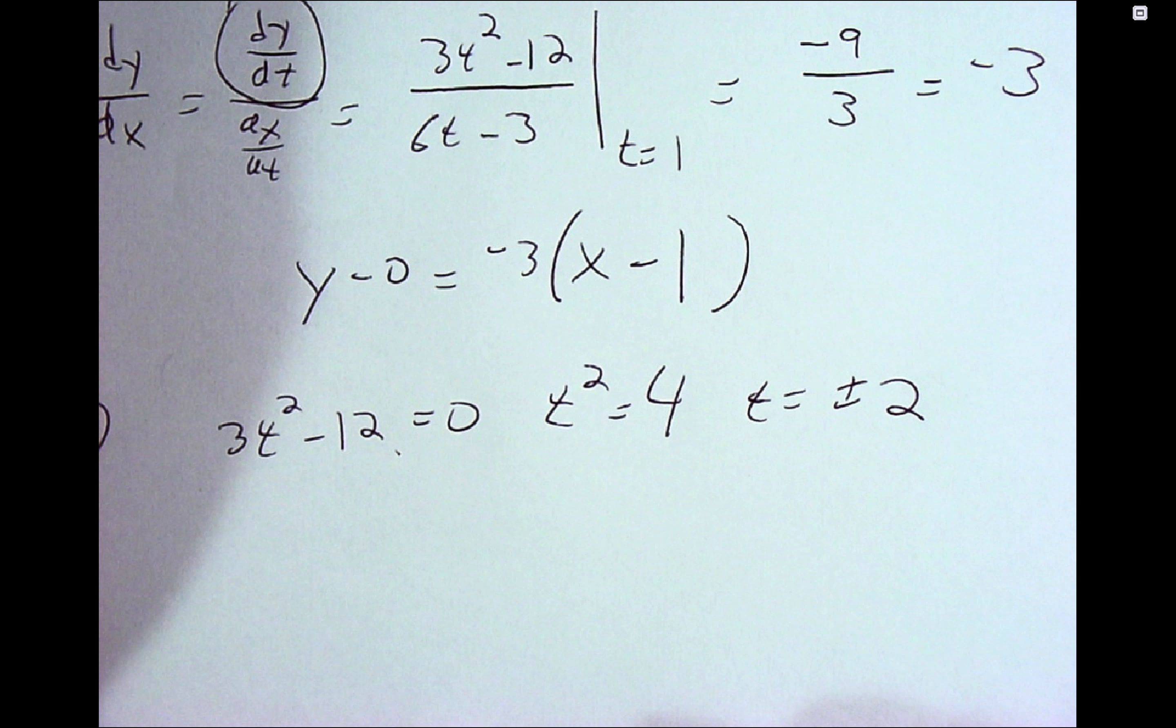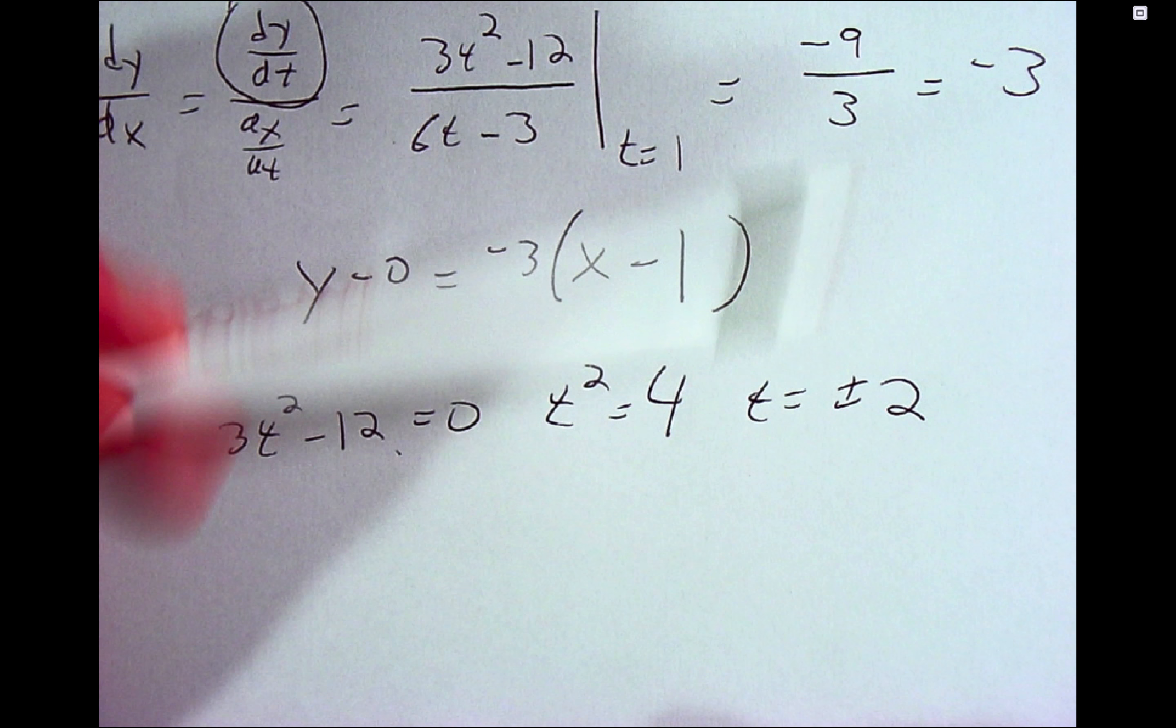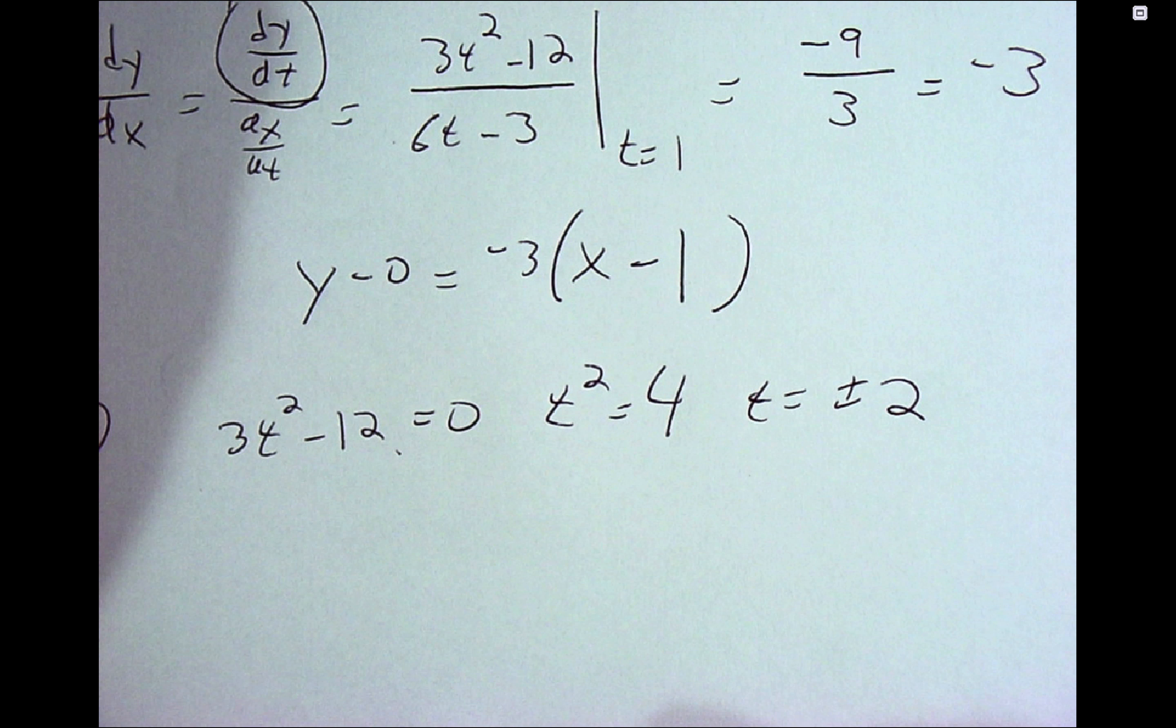but it's not, right? 6t minus 3 will not be 0 at 2 or negative 2. Sometimes they will ask you for the points where it's happening, not just the values of t, in which case you'd have to plug 2 and negative 2 back into the original equations.